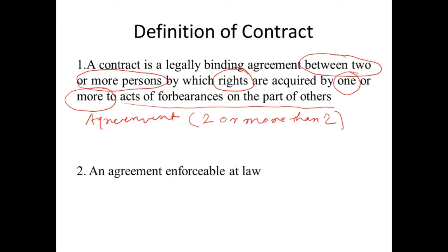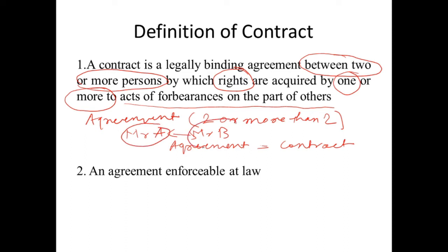For example, if Mr. A and Mr. B are the two parties, the agreement between these two persons is called a contract. By which Mr. A or Mr. B acquires rights — they acquire rights. Which right do they get? They get the right to act of forbearance on the part of others.